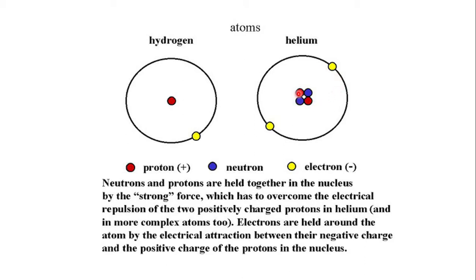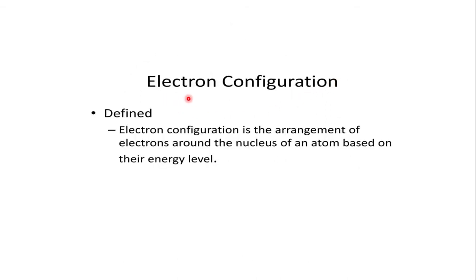We have to remember that protons cannot take part in any chemical reaction because they are strongly bound in the nucleus, whereas electrons can take part in chemical reactions. So it is important to understand what electronic configuration is. Configuration is the location of electrons around the nucleus in an atom — that is, in the orbit or energy level. Electronic configuration is the arrangement of electrons around the nucleus based on the energy level.